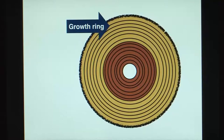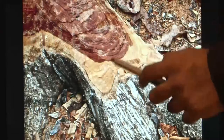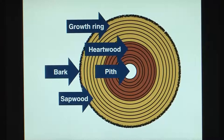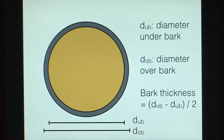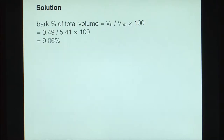We also looked at growth rings, which are formed annually and are also known as annual rings. They form because of changes in growth speed during different seasons, and are used in dendrochronology — the scientific study of dating tree rings. For logs, we take measurements of diameter over bark and diameter under bark to also get the bark thickness. We solved a problem where we were given the over-bark diameter, under-bark diameter, and length, and calculated the bark thickness, total volume, bark volume, and bark percentage of total volume.